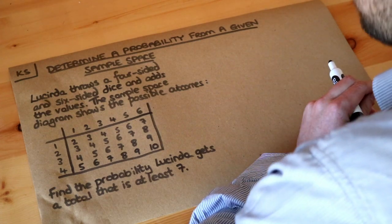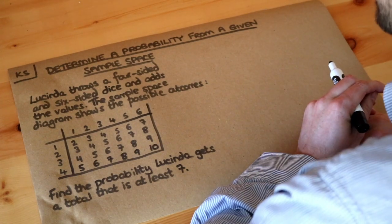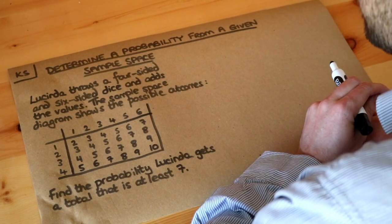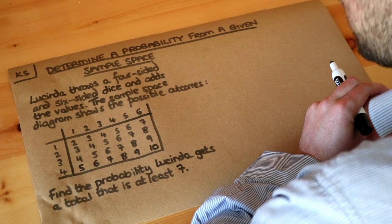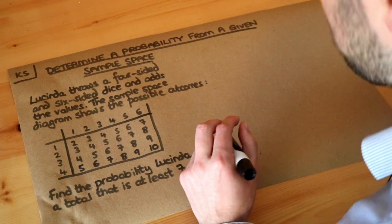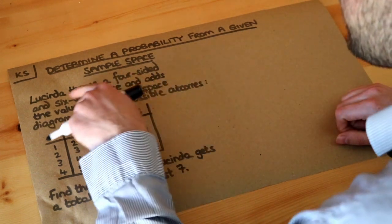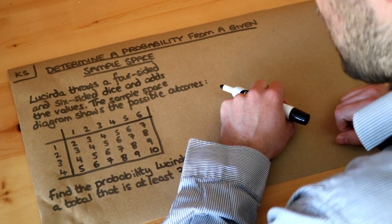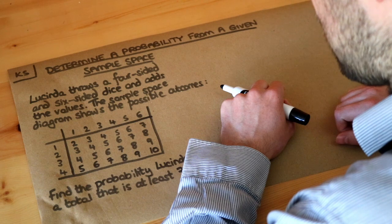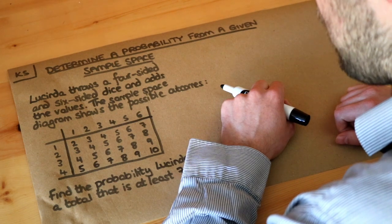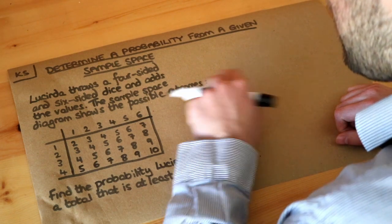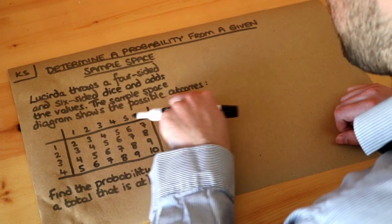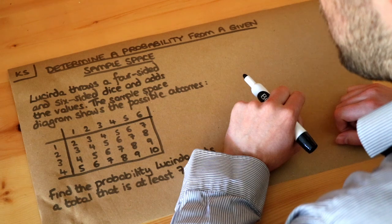Hello and welcome to this Dr. Ross Maths key skill video on determining a probability from a given sample space. Let's just read the question first. Lucinda throws a four-sided and six-sided dice and adds the values. The sample space diagram shows the possible outcomes.